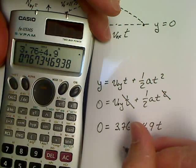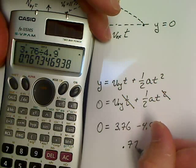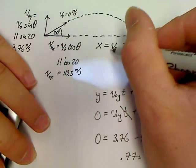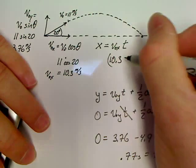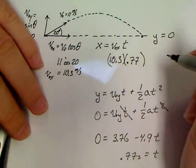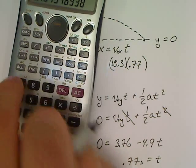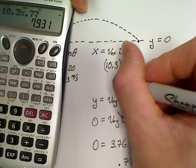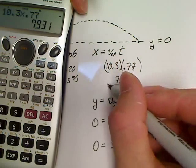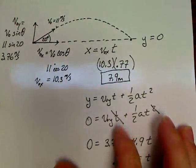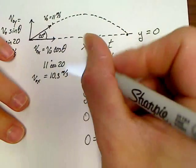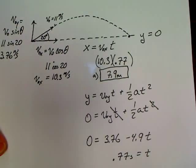And now all we have to do is come back up here. 10.3 meters per second times 0.77 for a time, 0.77 is 7.9 meters. So there's our answer to the long jumper. He's going to travel 7.9 meters. It also asks the question, the second thing. This was the answer to part A. Part B asks how high.